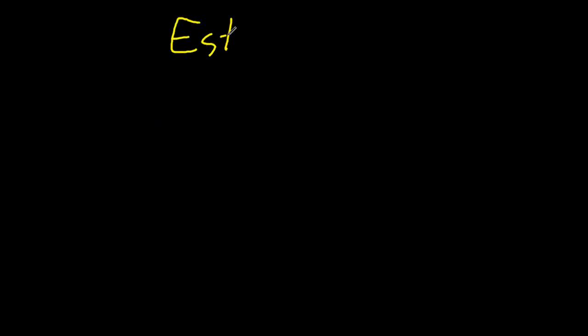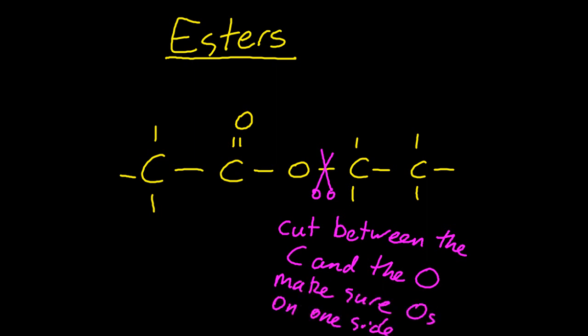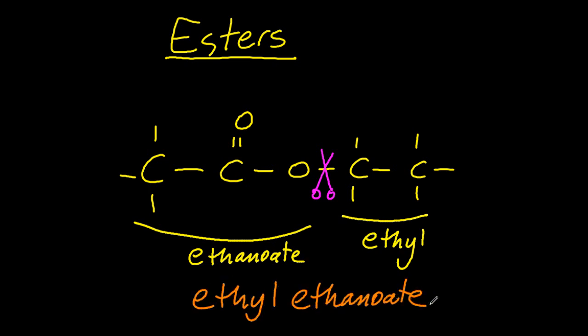Esters. These look worse than they are. Let me draw out a simple ester. Now, you have to make a cut in it, in your mind, to get the name right. Cut between the carbon and the oxygen. But make sure the oxygens are on one side. You might do it another way, but this is how I do it. No, that's wrong. Make sure the oxygens are on one side. So make that kind of cut in your mind, and then you can name it properly. So on the right-hand side, that's ethyl, and that's ethanoate. It's like ethanoic acid without the hydrogen. So it's called ethyl ethanoate.